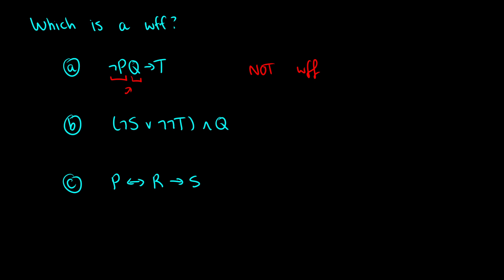The second formula: not-S is good, not-not-T is good, these are in brackets joined by OR so that's fine, and then we're conjoining with Q. So yes, this is a well-formed formula, and we could draw a tree for it if we wanted to.